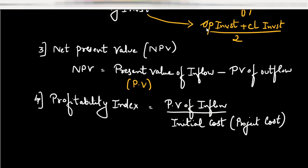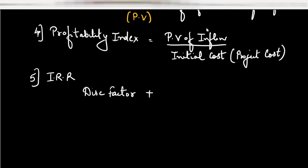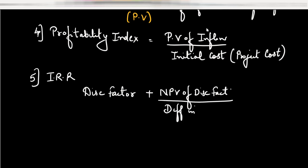Net present value and profitability index are both important. For the discounted payback period, we use the same completed-years formula written earlier. For IRR — internal rate of return — the formula is somewhat tricky: lower discounting factor plus NPV at lower discounting factor, divided by the difference in present values, multiplied by the difference in discounting factors.